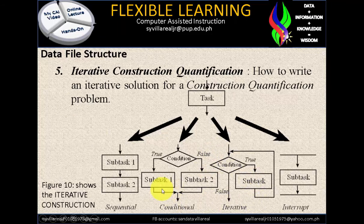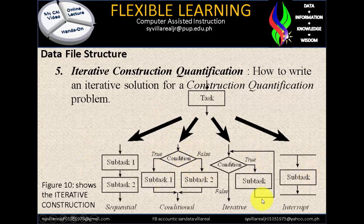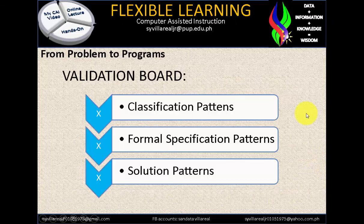Conditional is a conditional relation. We use greater than, less than, exactly equal, not equal — those are conditional. This is very easy for us to understand. It's a validation board: classification of patterns from BG2, formal specification pattern, and solution pattern from BG3.